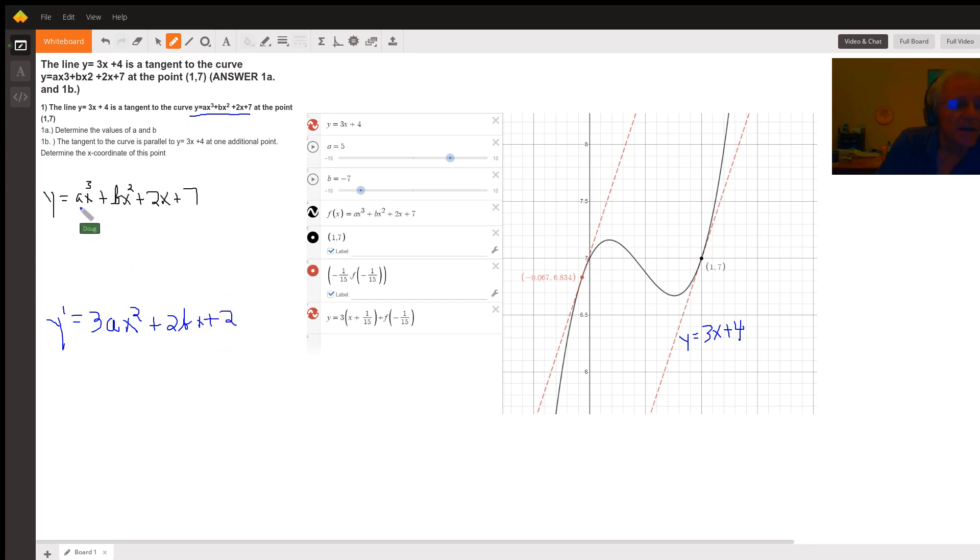The key is that if the curve passes through the point (1,7), that means when x is 1, y is 7. So I can use that information to say I'll get a value of 7 whenever I put a 1 in for x. So this first term will just become a. This term will become b. This term will become 2. And the -7 is constant.